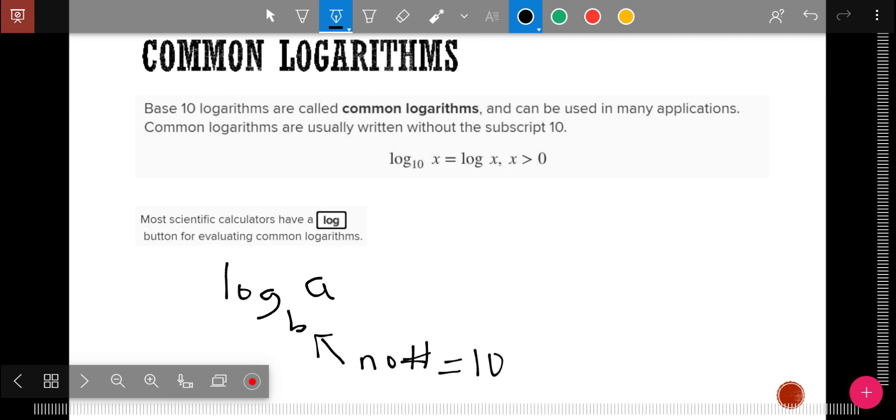If I ask you to find the log of 5, there is no number in the base, right down here. And so that would automatically be a 10. Your calculator automatically thinks of it. Now, logarithms undo exponentials. And so this is really to undo scientific notation. That's why it's base 10. But that is the common logarithm.